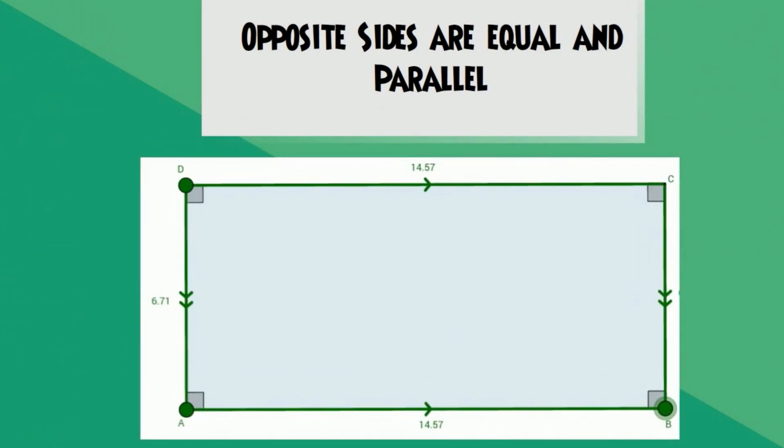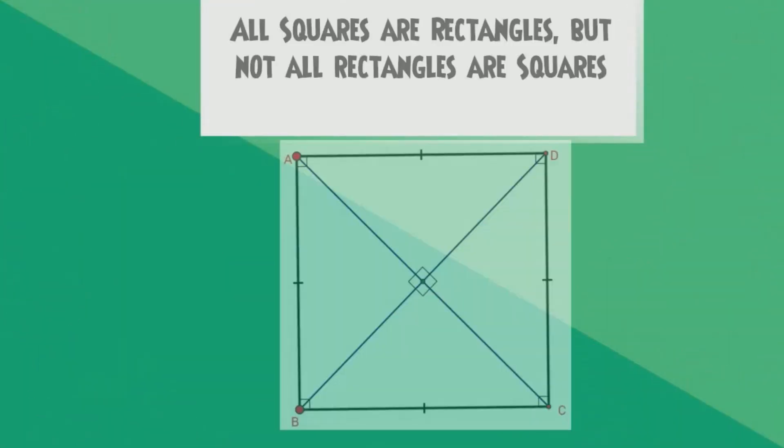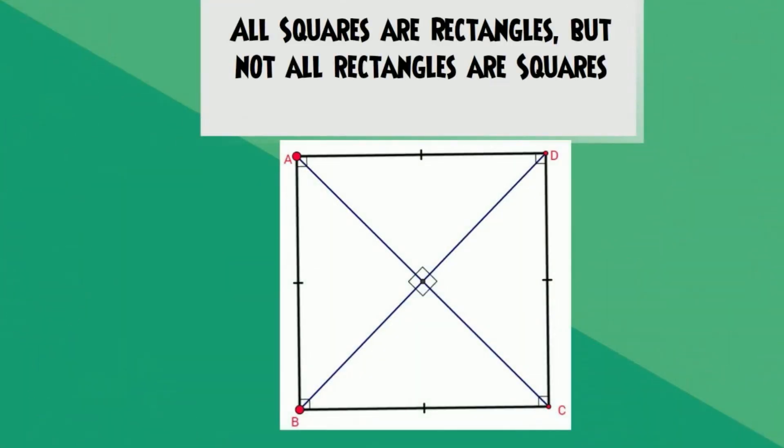Opposite sides of a rectangle are equal, and the opposite sides are parallel. All squares are rectangles, but not all rectangles are squares.